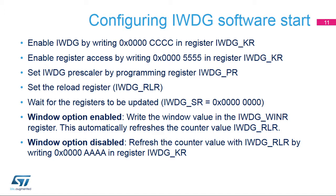Remove IWDG register protection by writing 0x00005555 to unlock the key. Set the IWDG prescaler in the IWDG PR register by selecting the prescaler divider feeding the counter clock. Write the reload register, IWDG RLR, to define the value to be loaded in the watchdog counter. After accessing these registers, wait for the IWDG SR bits to be reset to confirm the registers have been updated. Then either enable the window option by writing the window value in the IWDG WINR register, or refresh the counter by writing 0x0000AAAA in the key register to disable the window option.